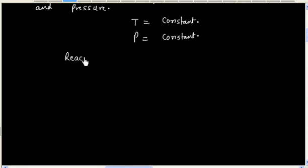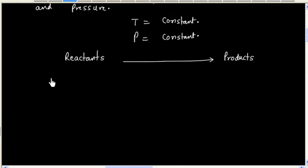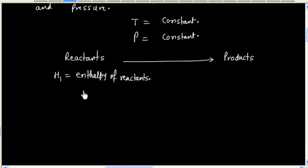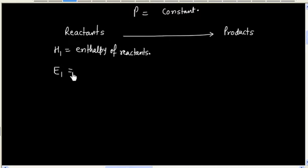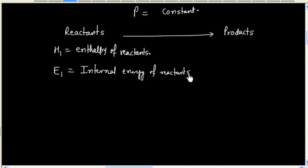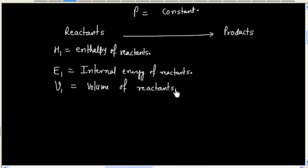We have reactants converted into products. Let us say H1 denotes enthalpy of reactants, E1 denotes internal energy of reactants, V1 denotes volume of reactants, and N1 denotes number of moles of reactants.